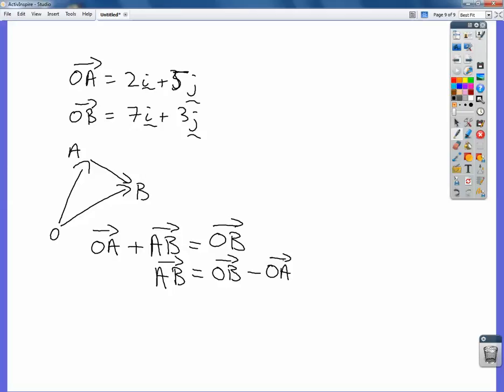Which essentially is the same as what we've done before: final minus initial. So where the vector finishes, take away where the vector starts. Let's do that using our i and j.